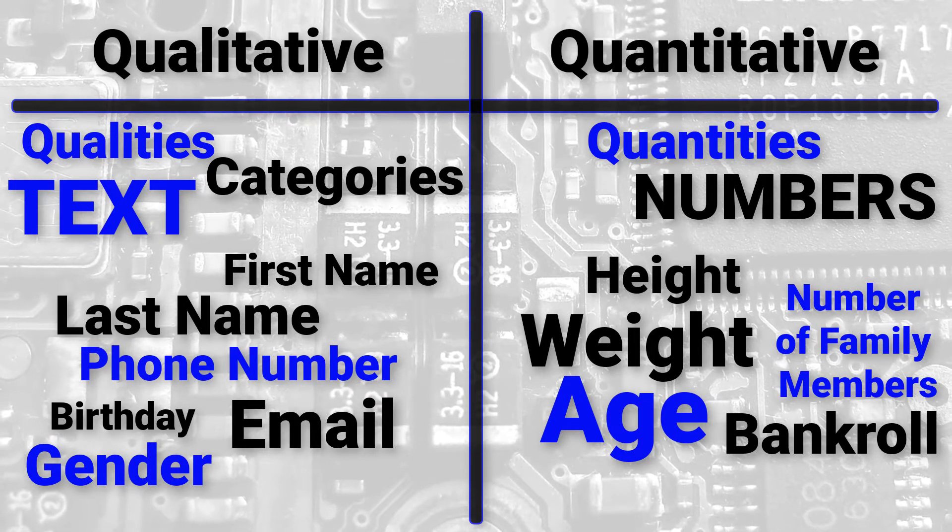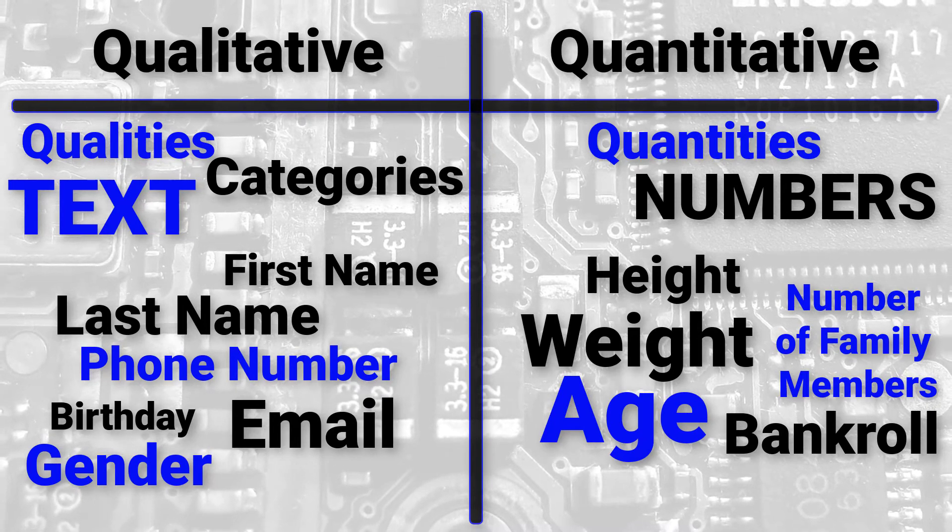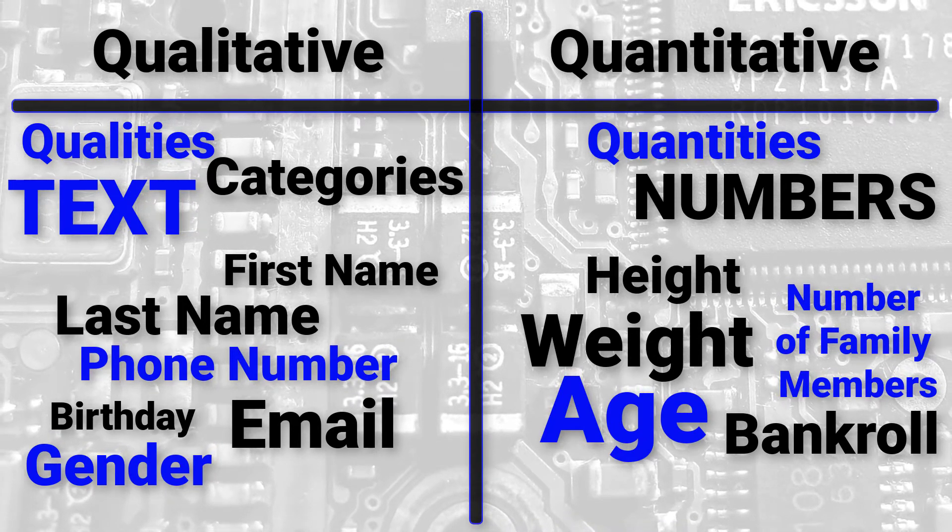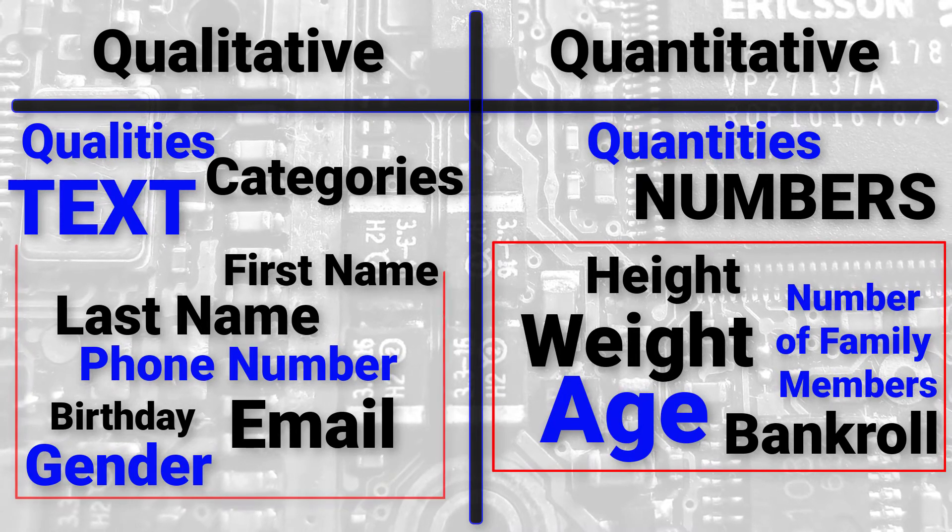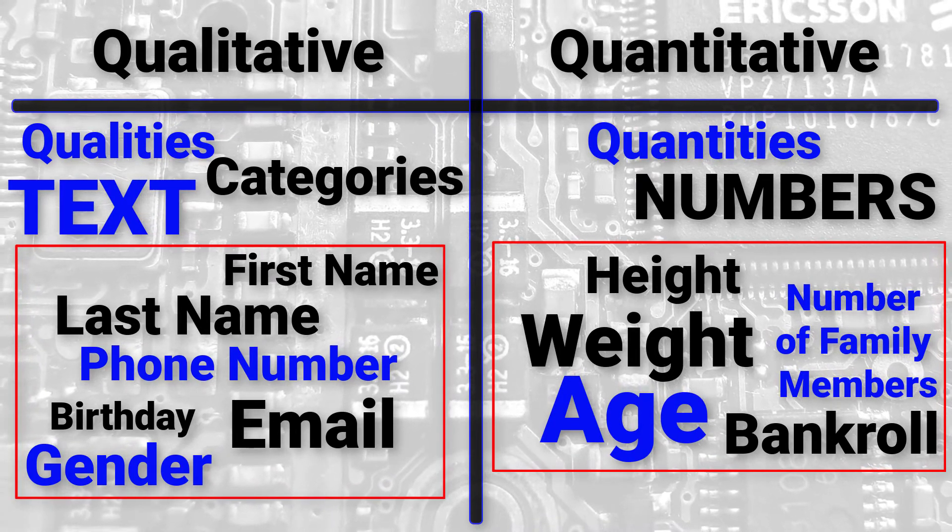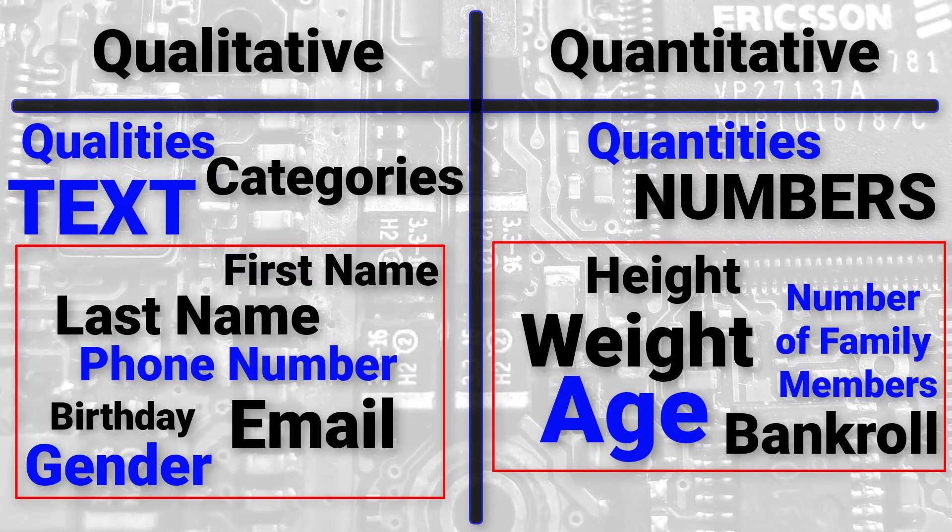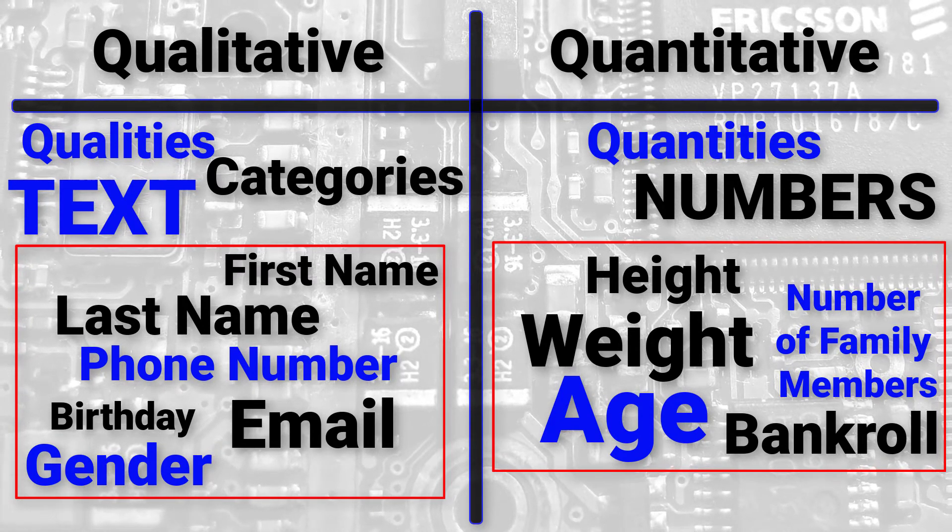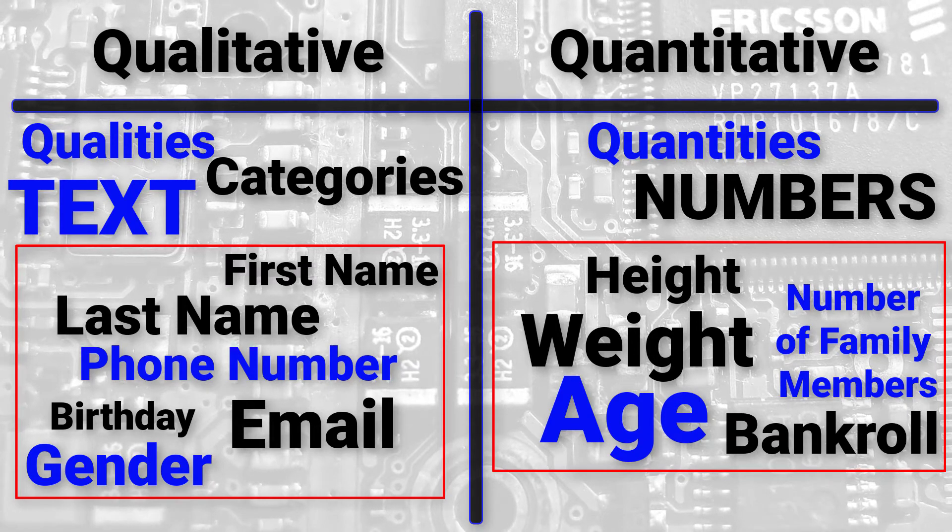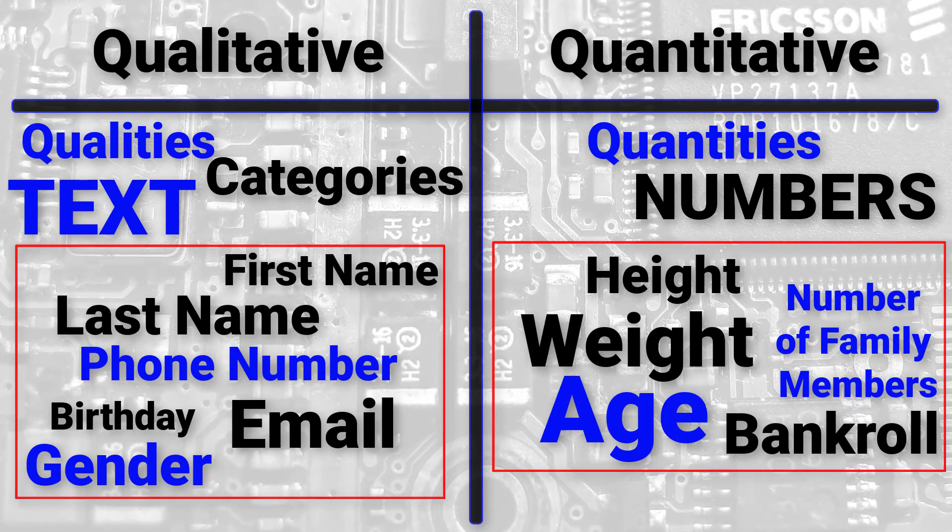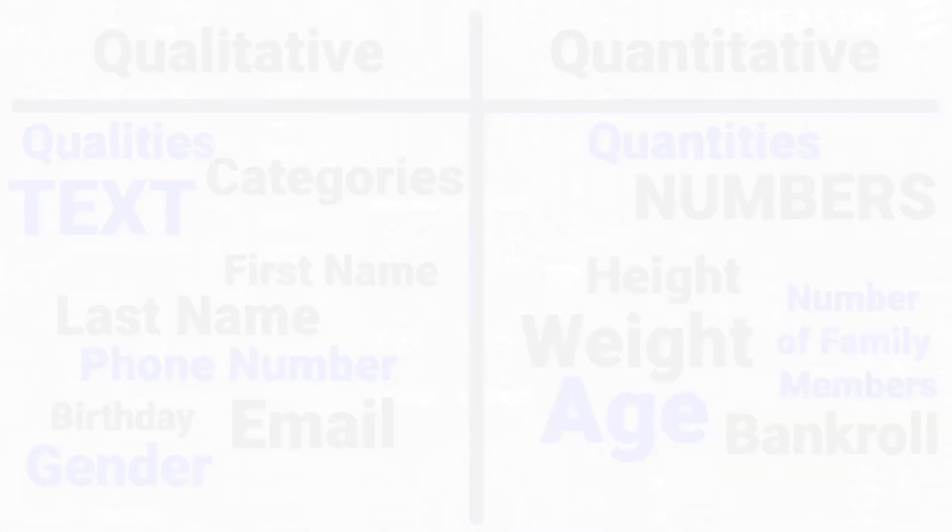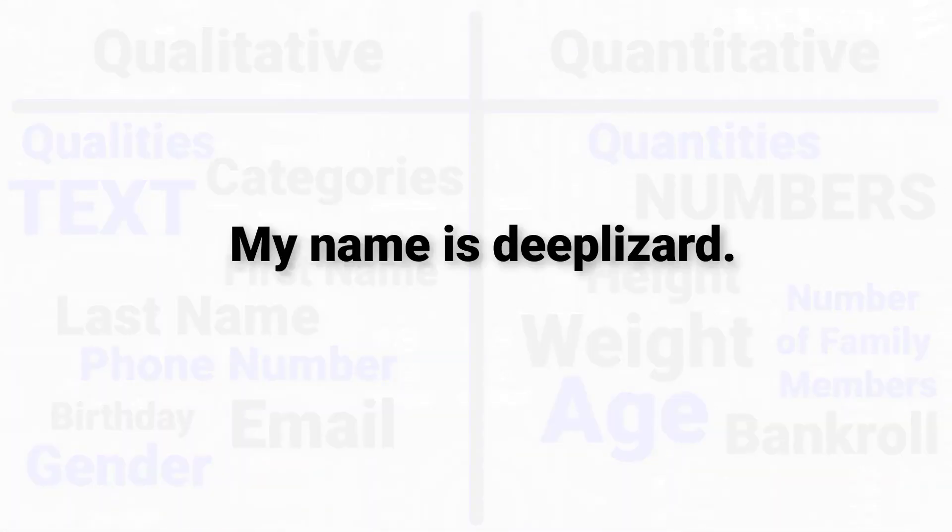The way this is done inside programs is very similar to how it is done in real life. I want you to notice how each of these items on the quantitative side and on the qualitative side aren't the actual data but instead refer to the data. These words are just labels that allow us to refer to the data. The actual data is the text or number values these labels represent. In real life we might say my name is deep lizard. In this example, the data is the text value deep lizard and the label is the word name.